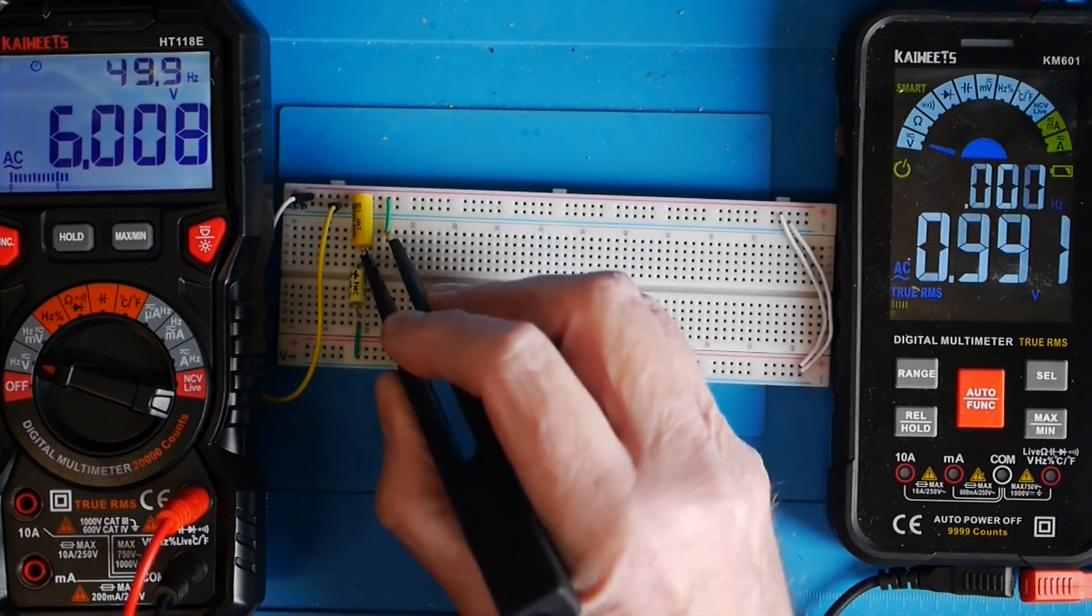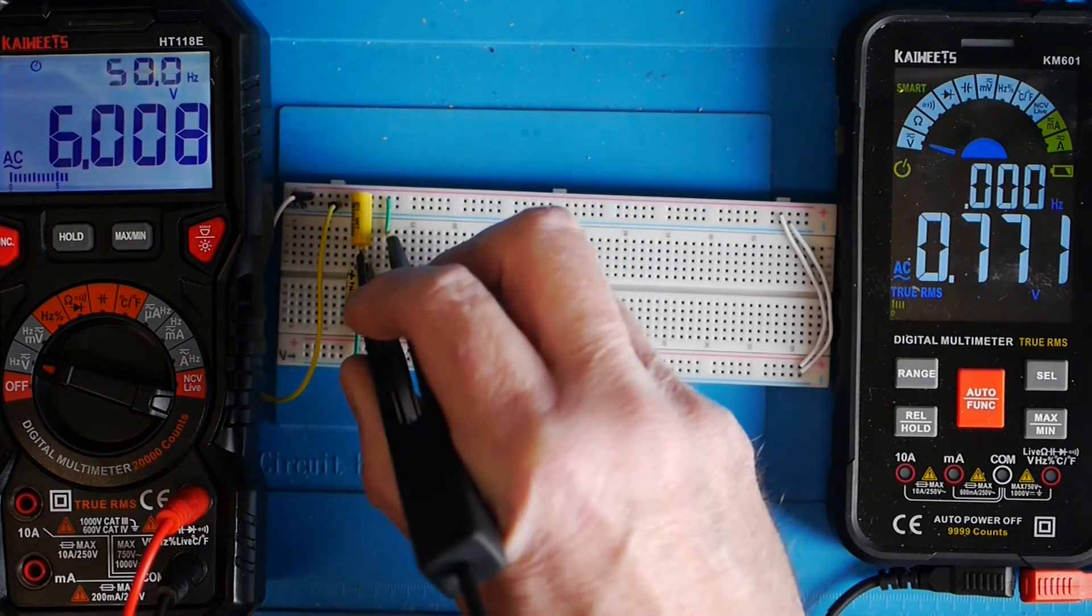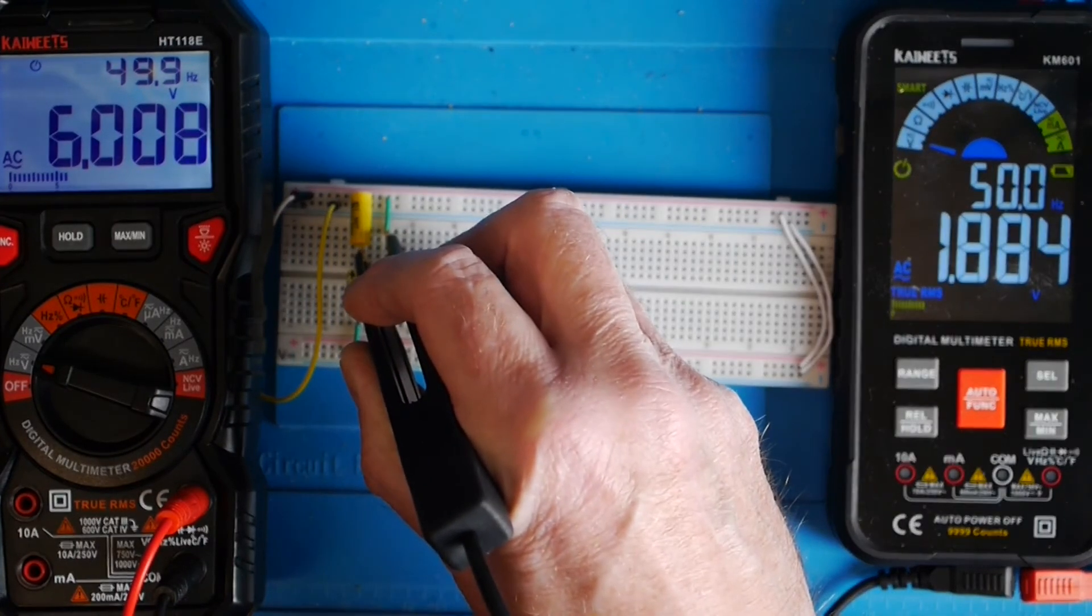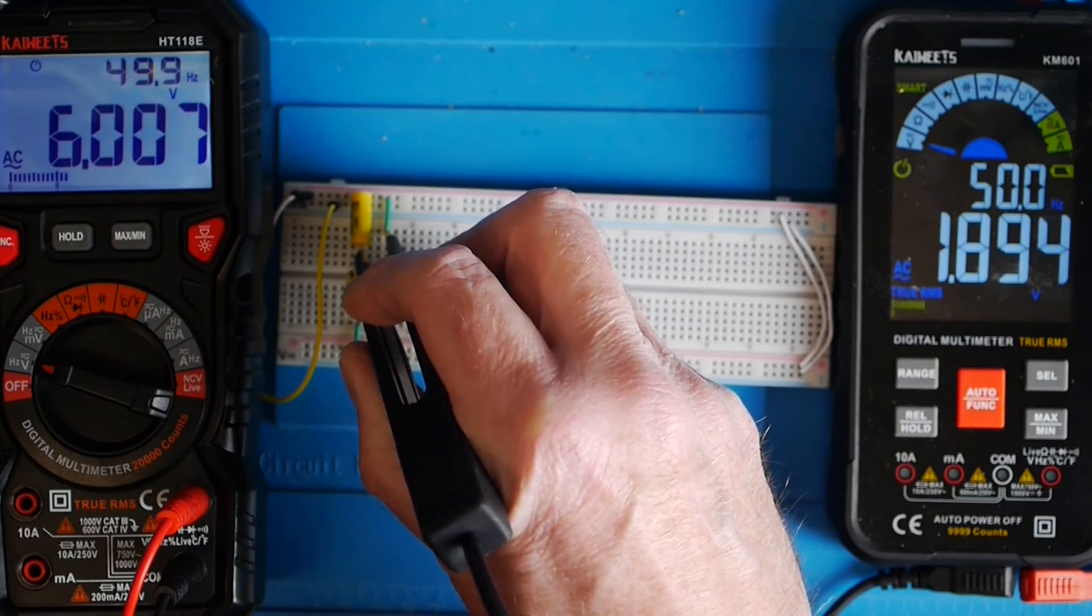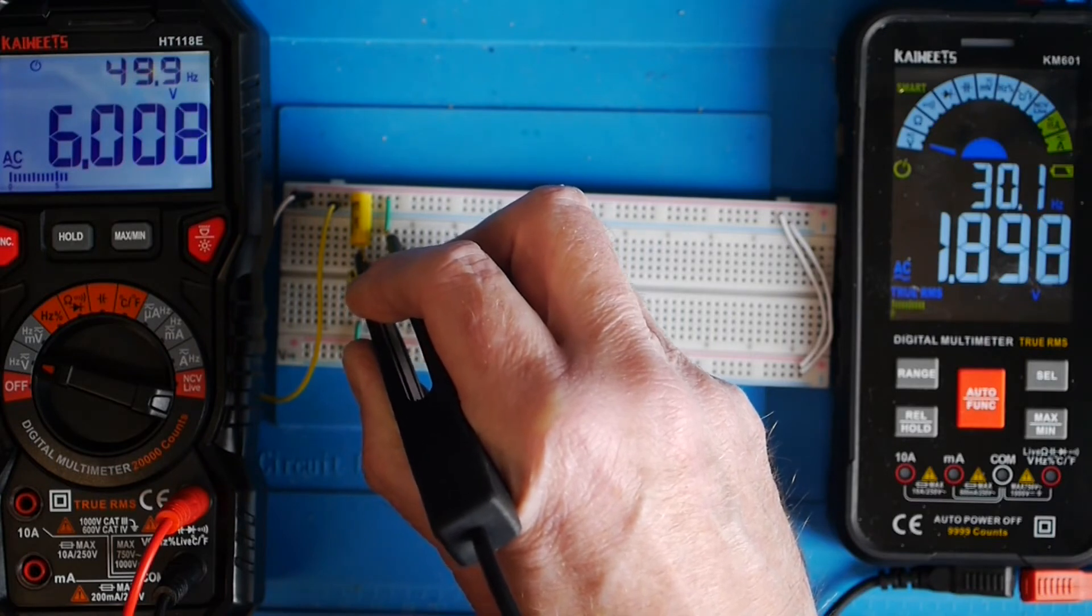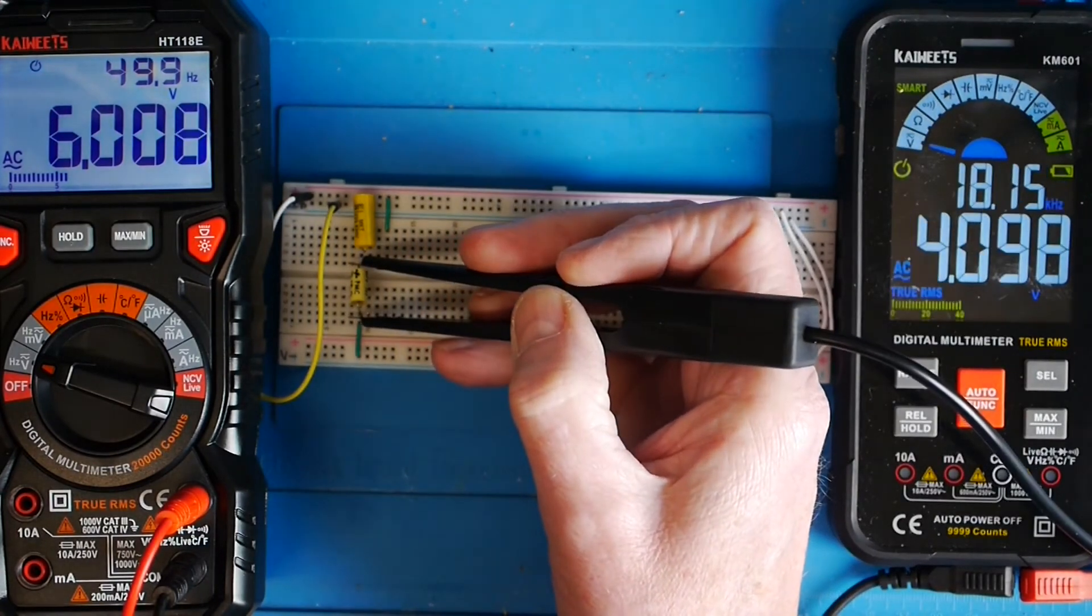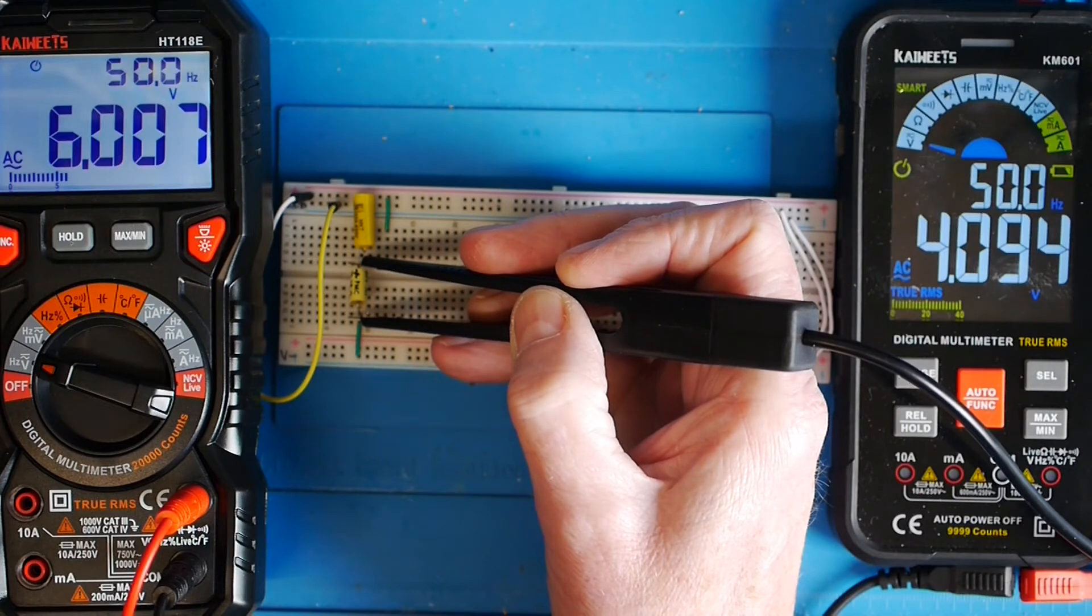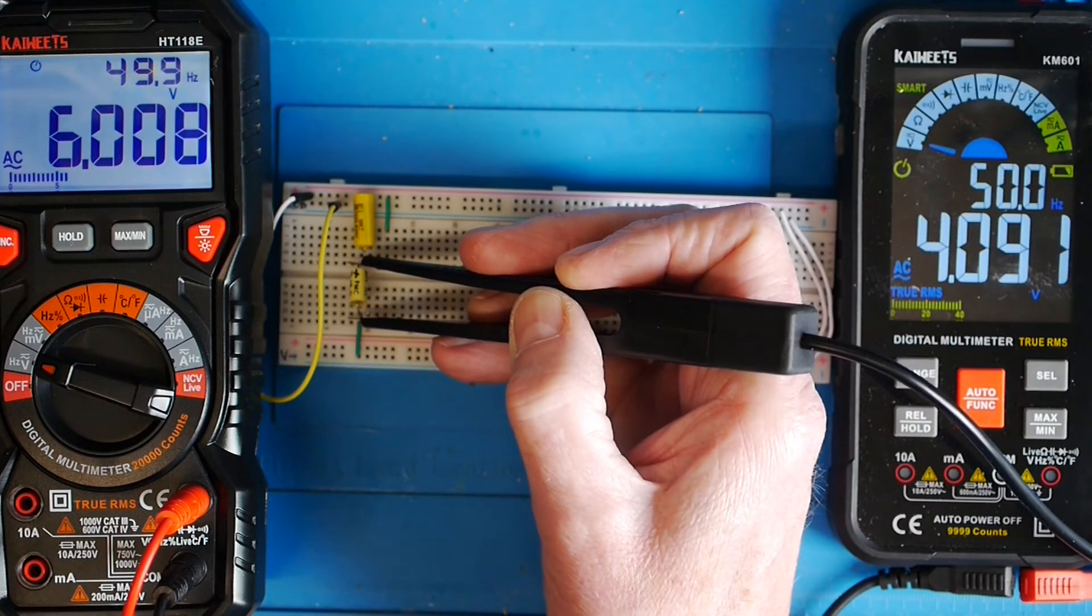Let's have a look what the voltage is between the top and the center. We're getting 1.887, let's call it 1.89 volts AC across the top. Across the bottom one, you should be able to do that fairly easily, we're getting 4.09, about 4.09 volts across the bottom capacitor.